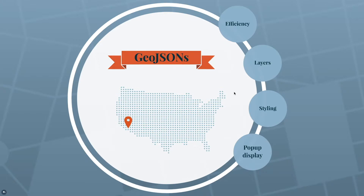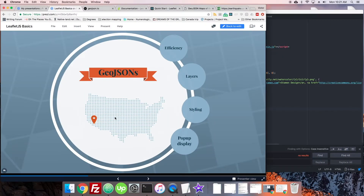You can also attach things like pop-ups, you can make sure there are markers — you can do all the normal things you'd hope you could do with other mapping tools when it comes to working with GeoJSONs.